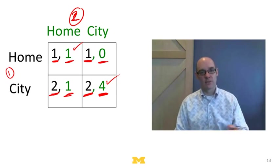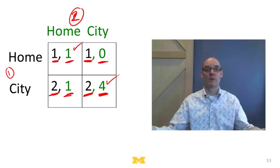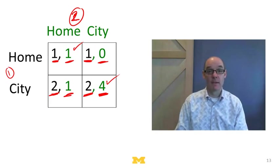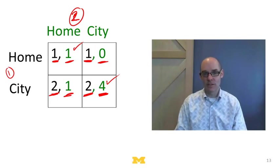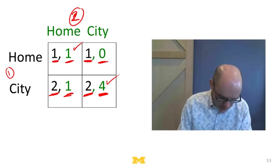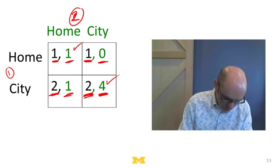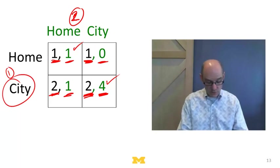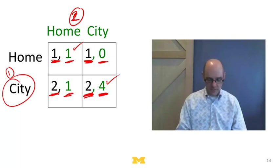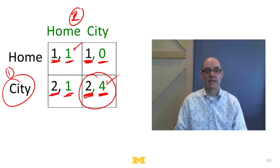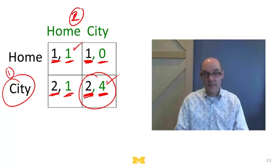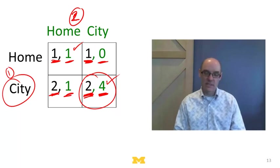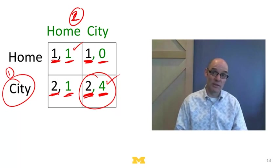This is where the rationality assumption is useful. If person two assumes person one is rational, they reason: person one gets a payoff of two by going to the city versus one by staying home, so person one will go to the city. Therefore person two goes to the city and gets the great payoff of four. When making real-world decisions, you often need a model of what other people will do, and often a decent model is to assume the other person is rational — that they're going to do the rational thing.